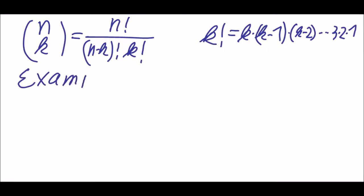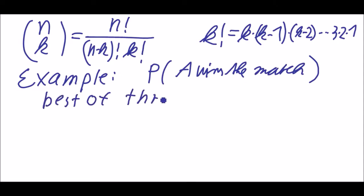So the example is the following: we want to know the probability that A wins the match in a best of three situation. That means you have to win two sets out of three sets, and the probability of this is P(A wins) equals P(two successes out of three trials) plus P(three successes out of three trials).